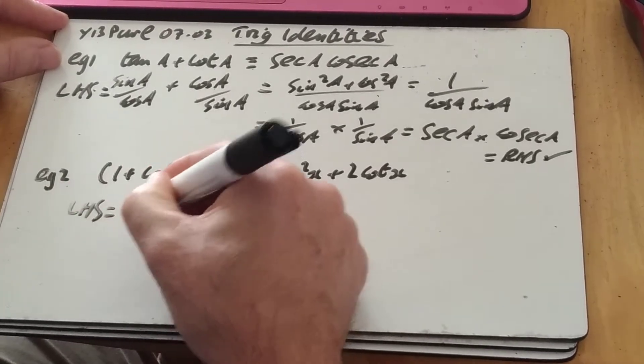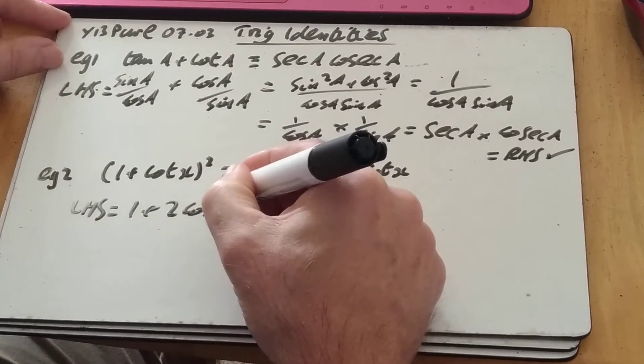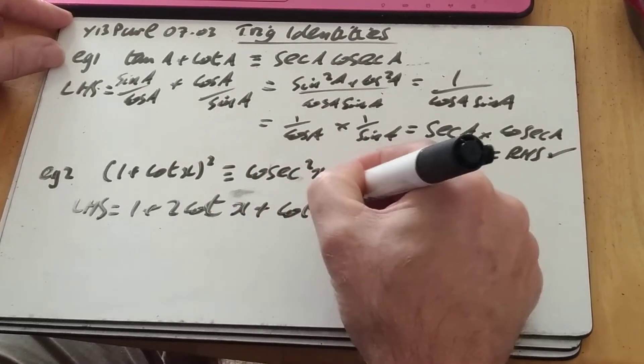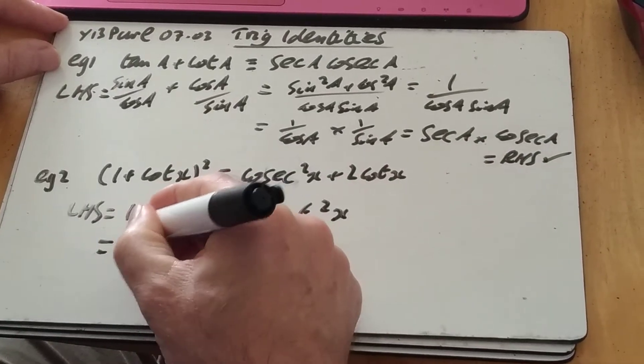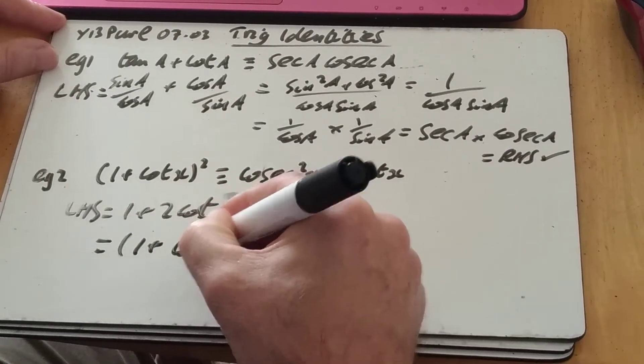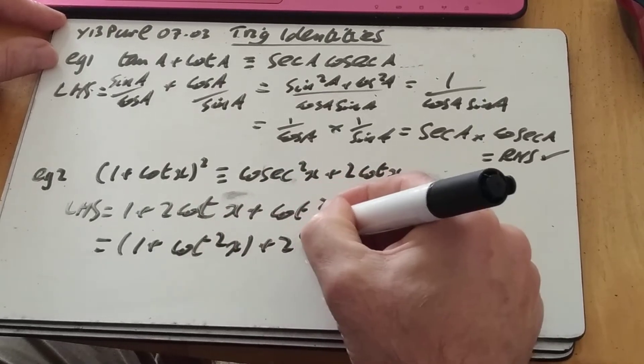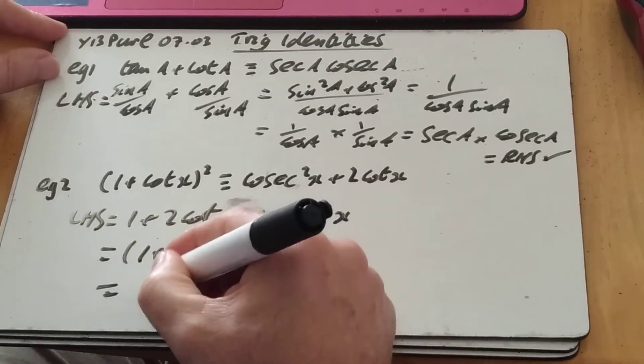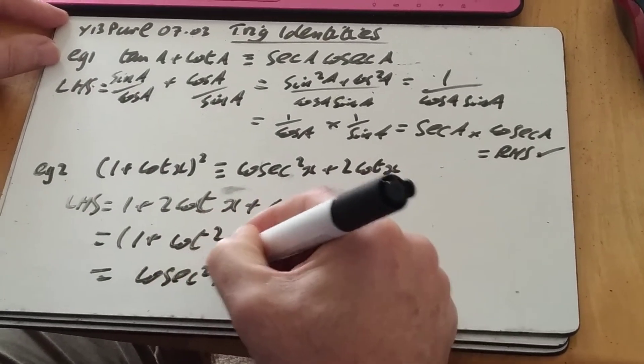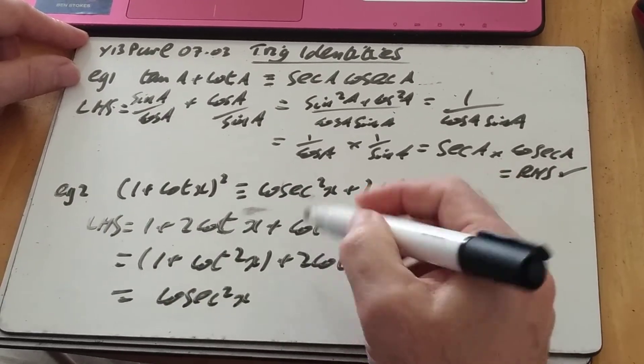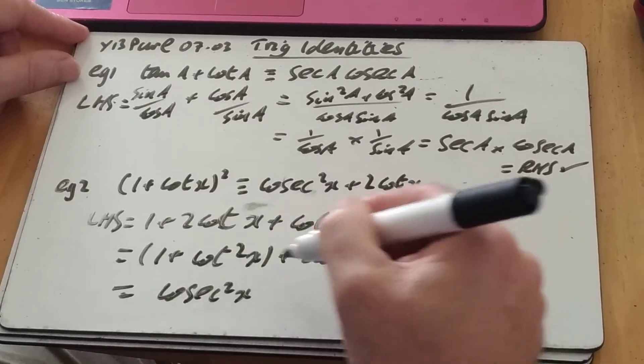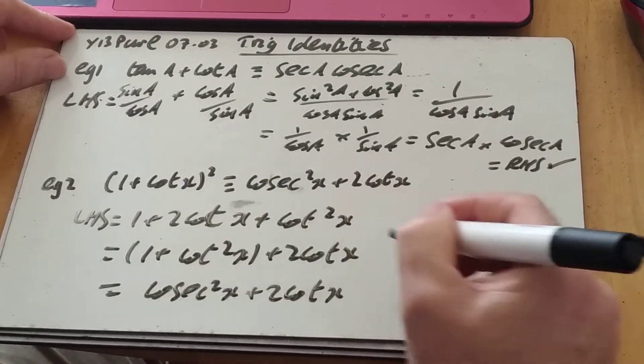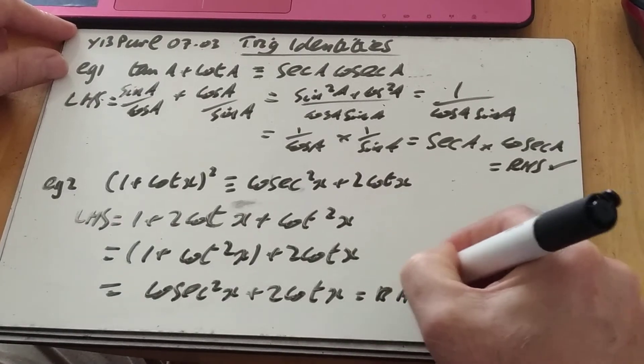And I've got the left-hand side then, is 1 plus 2 cot, not cot squared sorry, 2 cot plus cot squared x. And I can just reorder it, so I'm showing what it is there. And that was the line above that I was expecting because cosec x squared equals 1 plus cot squared. And it's nice, I could have probably gone from that to that, but because it's a show that, you're not going to get any marks for the last line. So it's nice to actually explain where it comes from like that. There's my right-hand side, good to go.